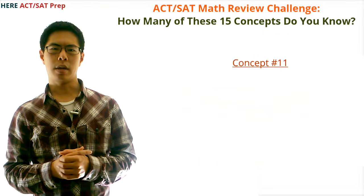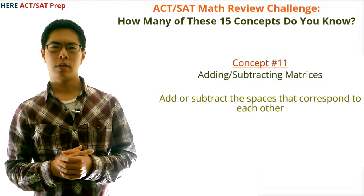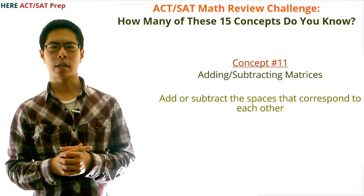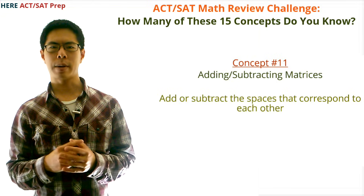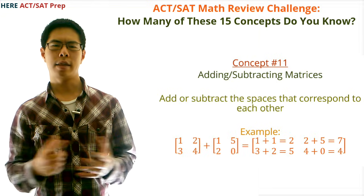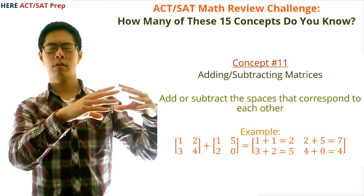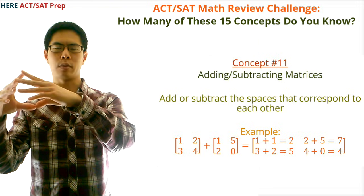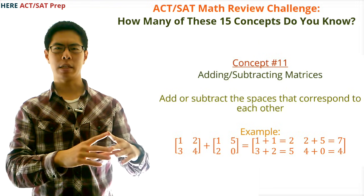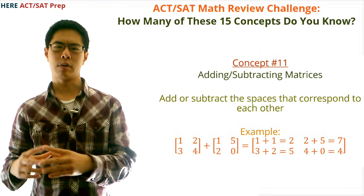Concept number eleven: adding or subtracting matrices. To add or subtract matrices, simply add or subtract the spaces that correspond to each other. For example, to add two 2×2 matrices: top left 1+1=2, top right 2+5=7, bottom left 3+2=5, bottom right 4+0=4.